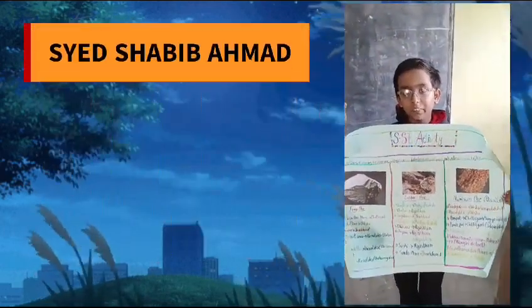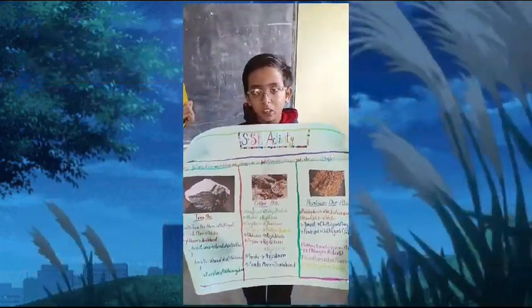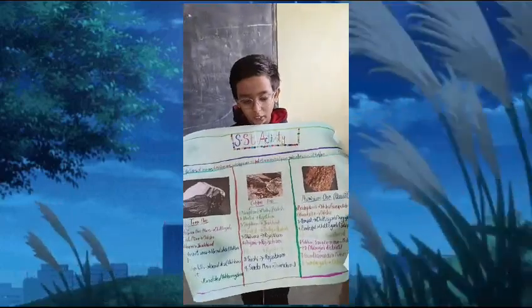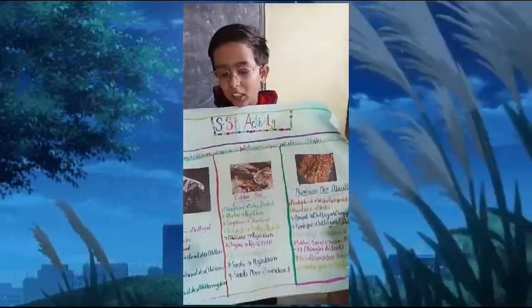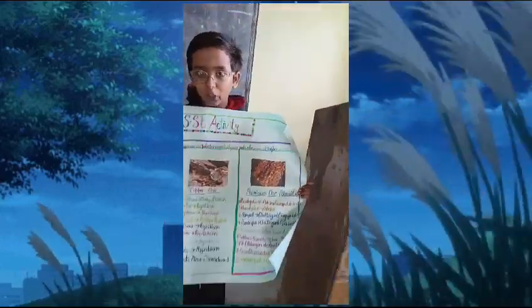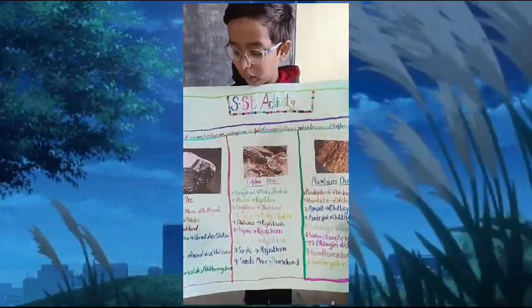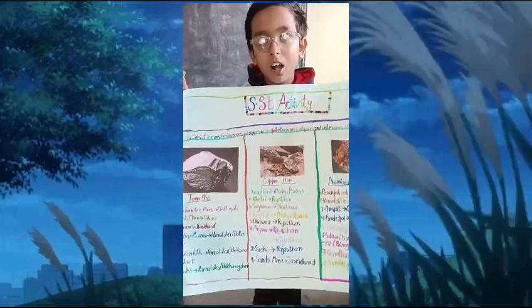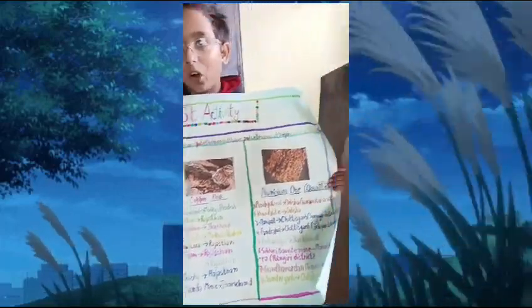My name is Reesh Rui and I am from class 4. Today we are here for a 60 activity. The topic of our activity is different types of ore and the places where they come from. The three types of ore are iron ore, aluminium ore and copper ore.